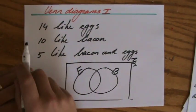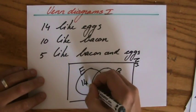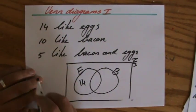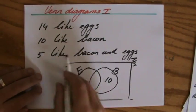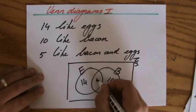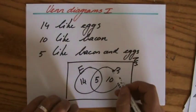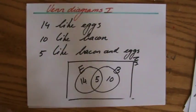How many people only like eggs? 14. So I have 14 people there. How many people only like bacon? 10. And both eggs and bacon is 5. So that's that part in the middle which those two circles share. Now that's the Venn diagram finished.